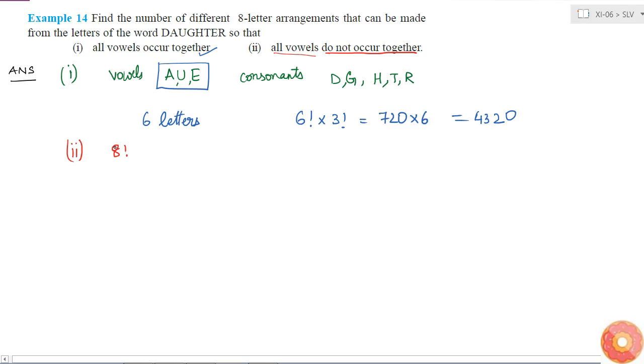The arrangements which come under this case is equal to the total arrangements without any restriction minus the number of arrangements with this restriction, because I want the complement of this. If I eliminate these arrangements from the total possible arrangements I'll get this minus 4320.